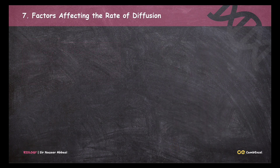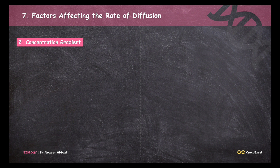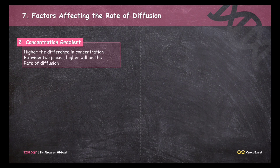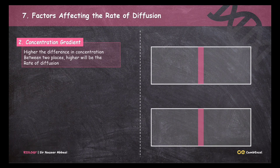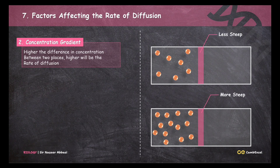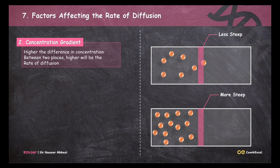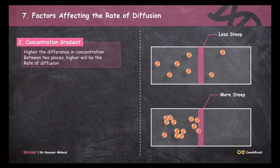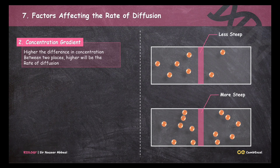The next factor affecting the rate of diffusion is concentration gradient. The higher the difference in concentration between two places, the higher the rate of diffusion. Looking at two diagrams: in the upper diagram there are relatively fewer particles on the left side, so the gradient is less steep, while in the lower diagram there are more particles on the left side, making the gradient steeper. Therefore, there will be a higher rate of diffusion in the lower diagram. This shows how concentration gradient creates differences in the rate of diffusion.